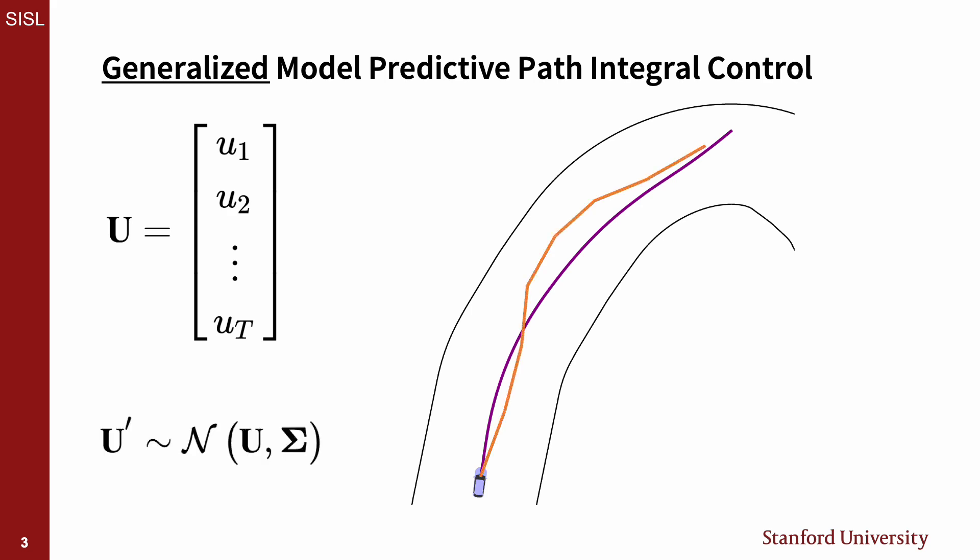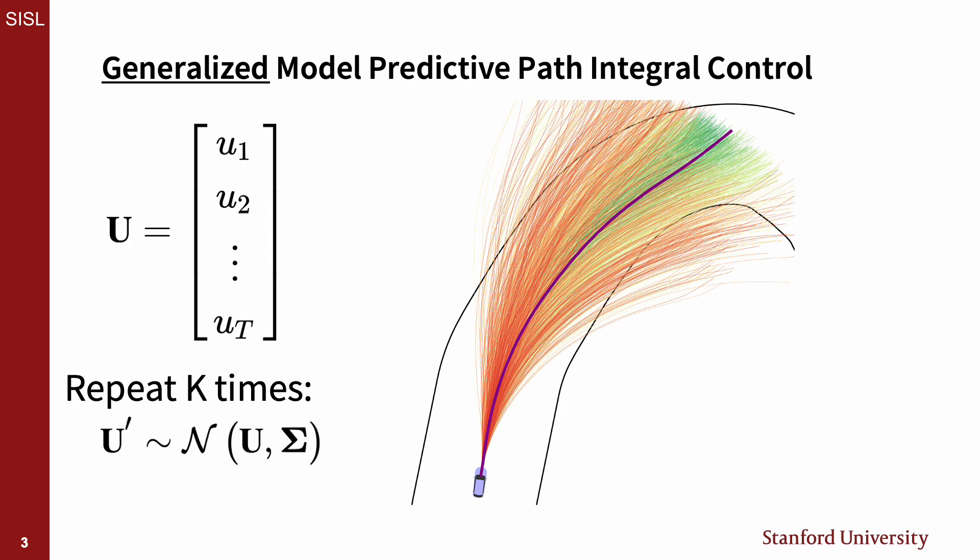With no additional modifications, this process is the same as MPPI, but with the ability to include off-diagonal terms in the covariance matrix, which provides a larger class of proposal distributions.